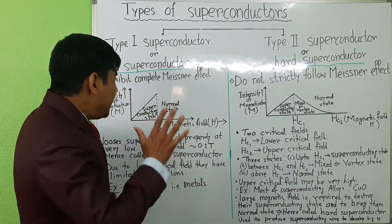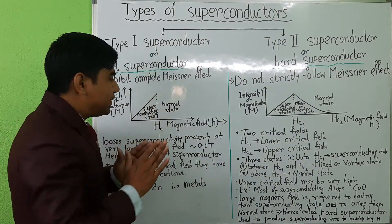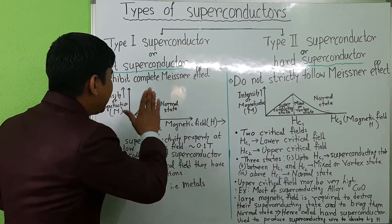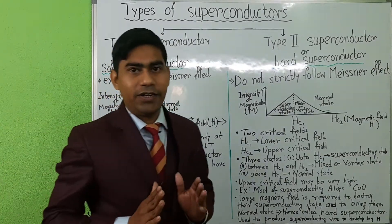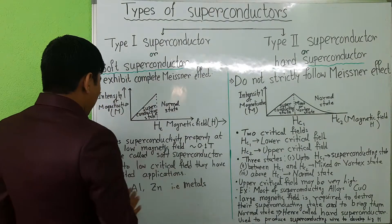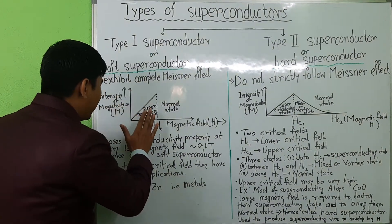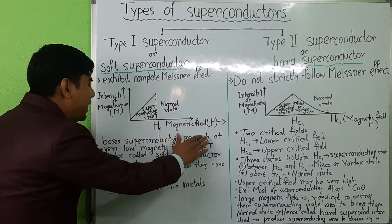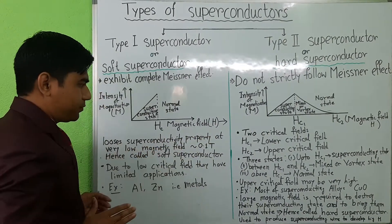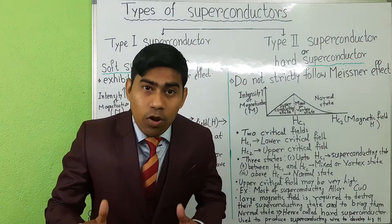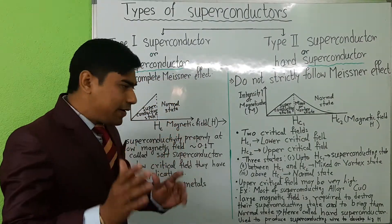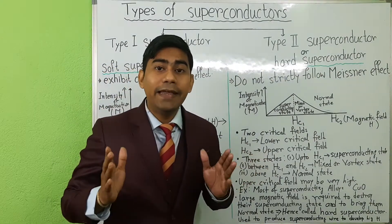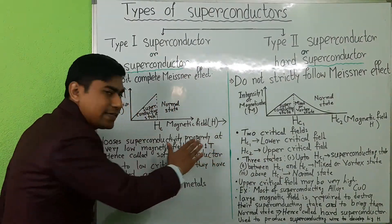In type 1 superconductors, there are two states: one is the superconducting state and another is the normal state. This type 1 superconductor loses its superconductivity property at a very low magnetic field, and the value of the critical magnetic field Hc for this type of material is very low — about 0.1 tesla.